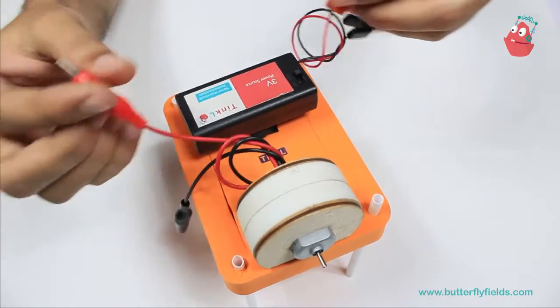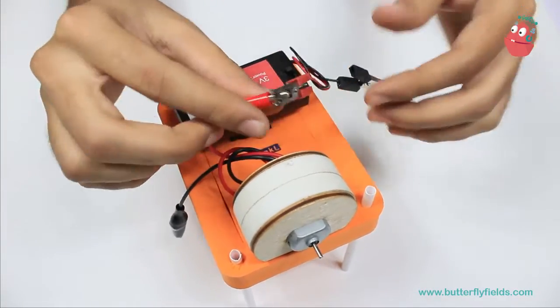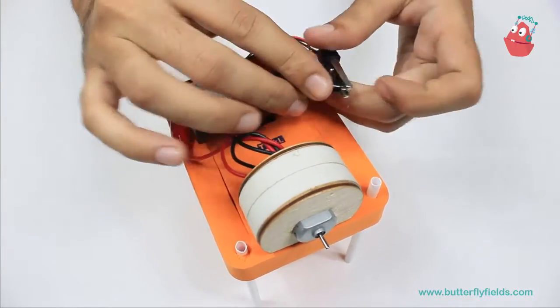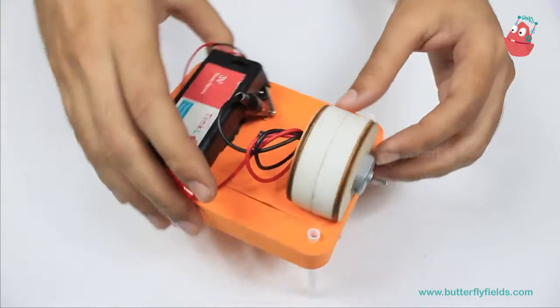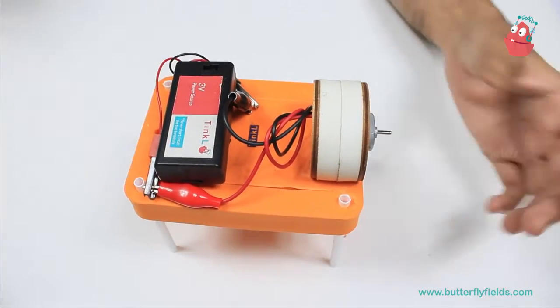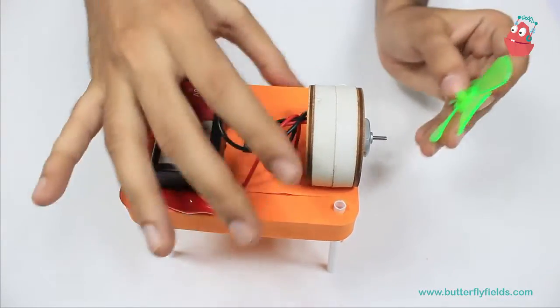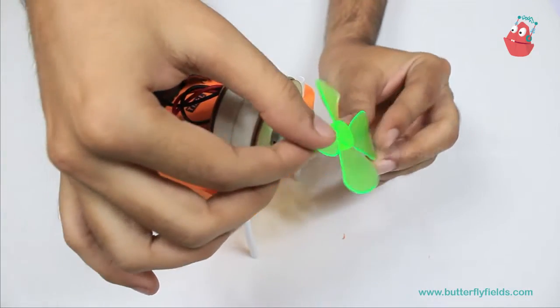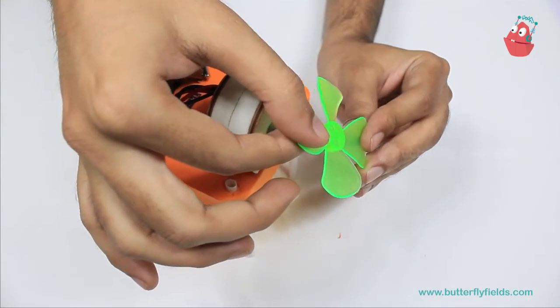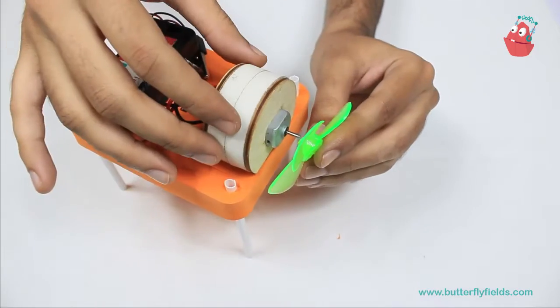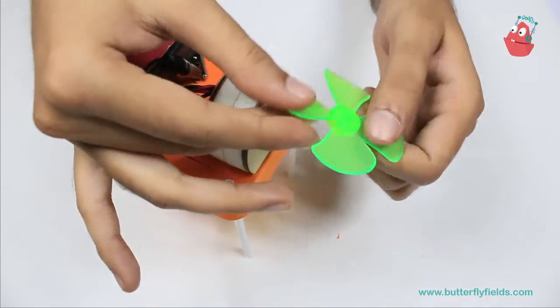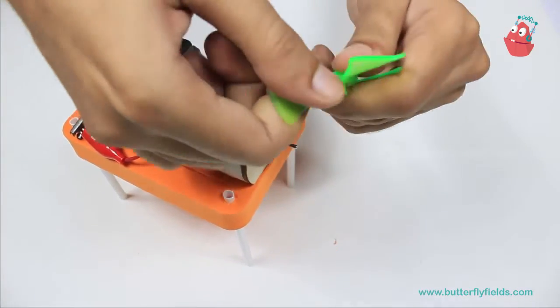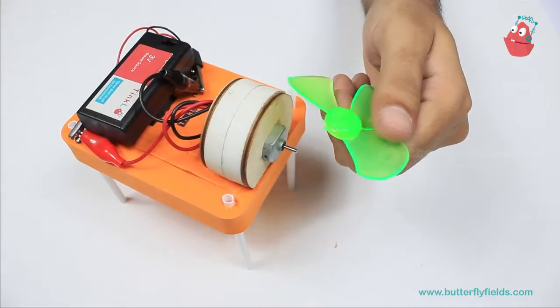Then we are going to connect them and attach a fan, but what you are going to do is break one wing of the fan and then attach it to the motor. To break the wing, you have to just hold the wing of the fan and then turn it.